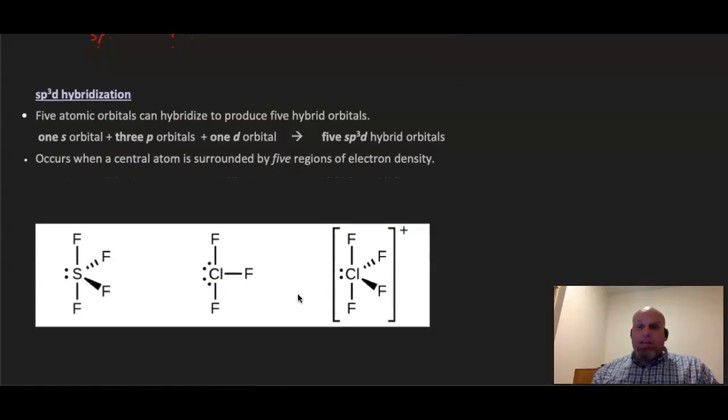Next up is sp3d hybridization. When we introduce the idea of having expanded octets, how in the world is that going to happen? It's going to happen because of this hybridization. We have to go beyond the S and the P subshells because in order to have expanded octet, we're going to need more than eight. So we're going to have to bring in some electrons from the D subshell. So that's why we get this sp3d hybridization. This would be for five electron domains. You can see some examples of what that would look like here. In the SF4, you would have a lone pair and four bonds. But in the CLF3, you'd have three bonds and two lone pairs. And then you have the polyatomic ion there as well.